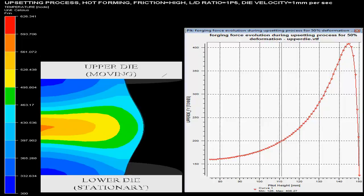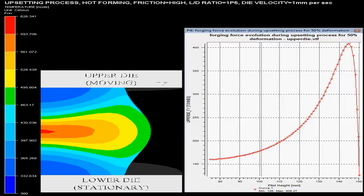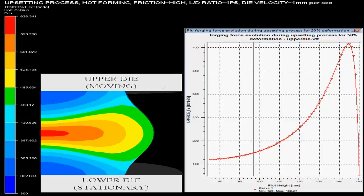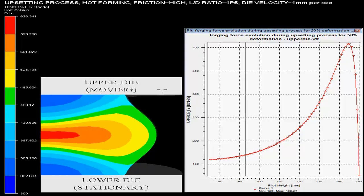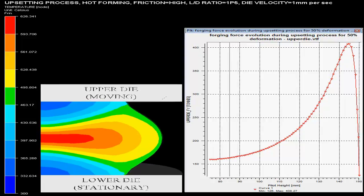In this finite element simulation video one can see upsetting process simulation for titanium. Here one can observe that forging process requires two dies, one bottom and one upper die.